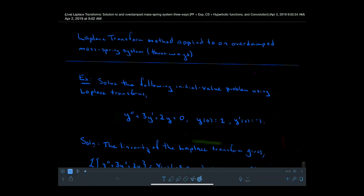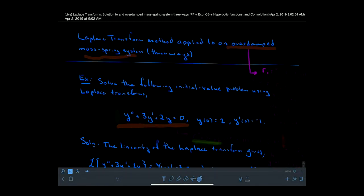In this video, I'd like to take us through using the Laplace transform method on a particular second-order ordinary differential equation given right here. This ordinary differential equation corresponds to an overdamped mass-spring system. When thinking about an overdamped mass-spring system, remember that R1 is different than R2, R1 and R2 are both real, and both less than zero. Overdamped means you're going to get pure exponential decay.